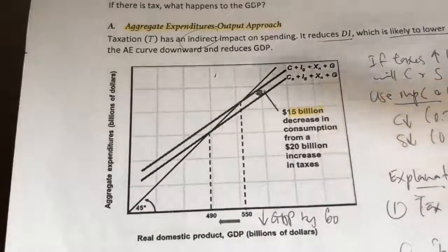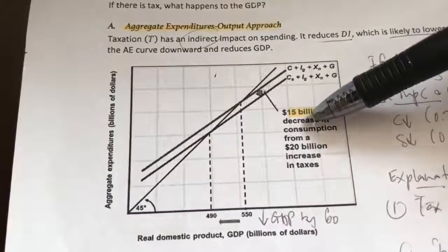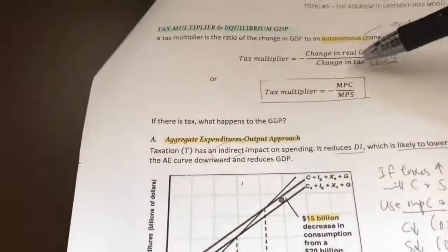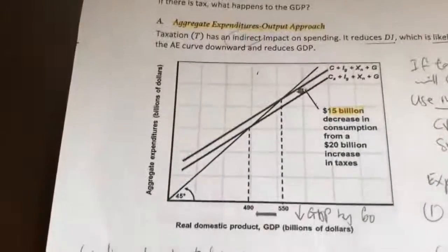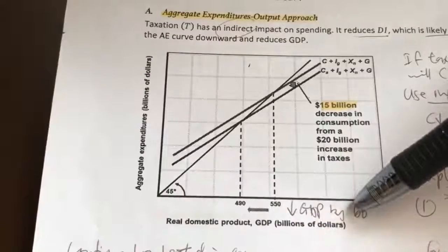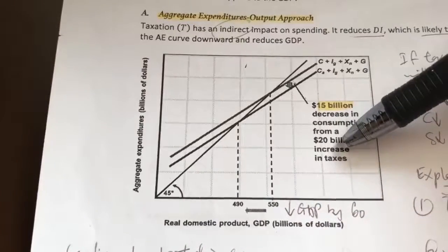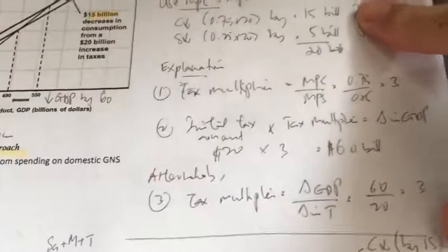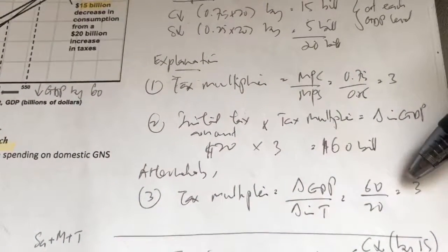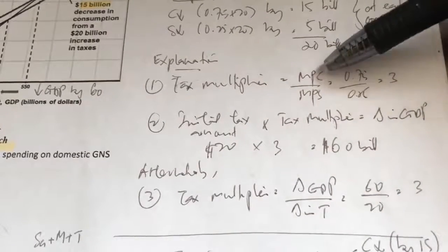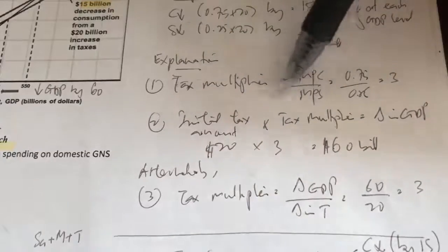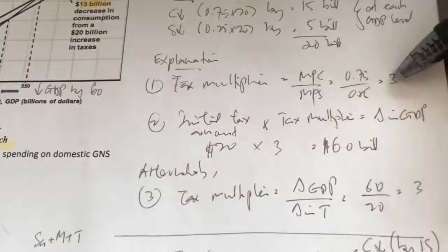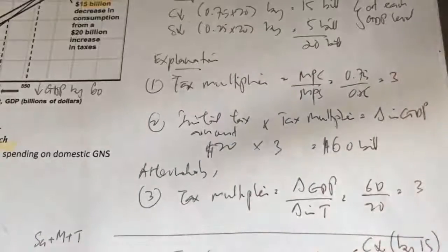How much is our multiplier in this case? There's a fall of $15 billion in consumption due to an increase of $20 billion in taxes. Using the first formula, the change in real GDP is 60, divided by the change in tax of 20 — so 60 over 20 gives you 3. Alternatively, using the second formula — negative MPC over MPS — 0.75 over 0.25 also gives you 3. So whichever formula you use, you get the same answer for the tax multiplier.